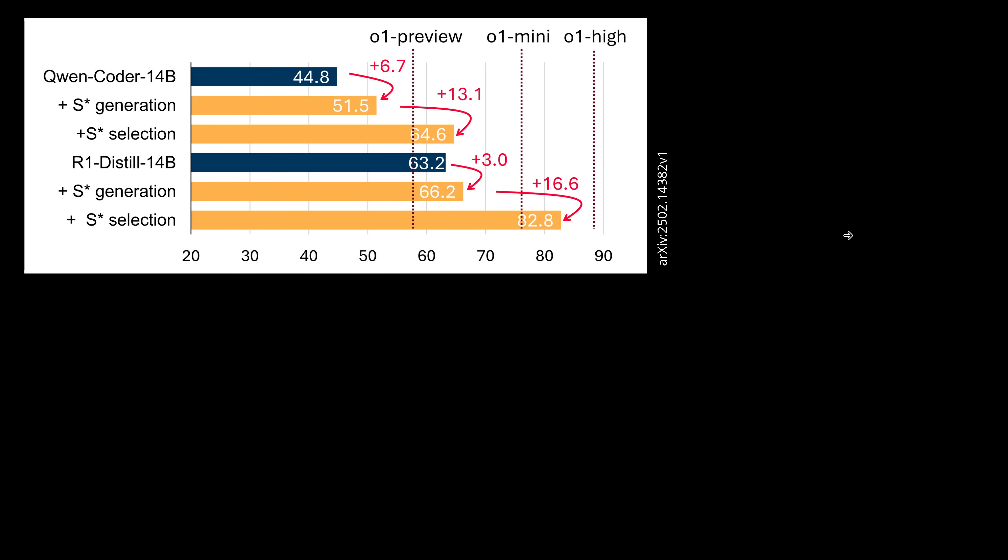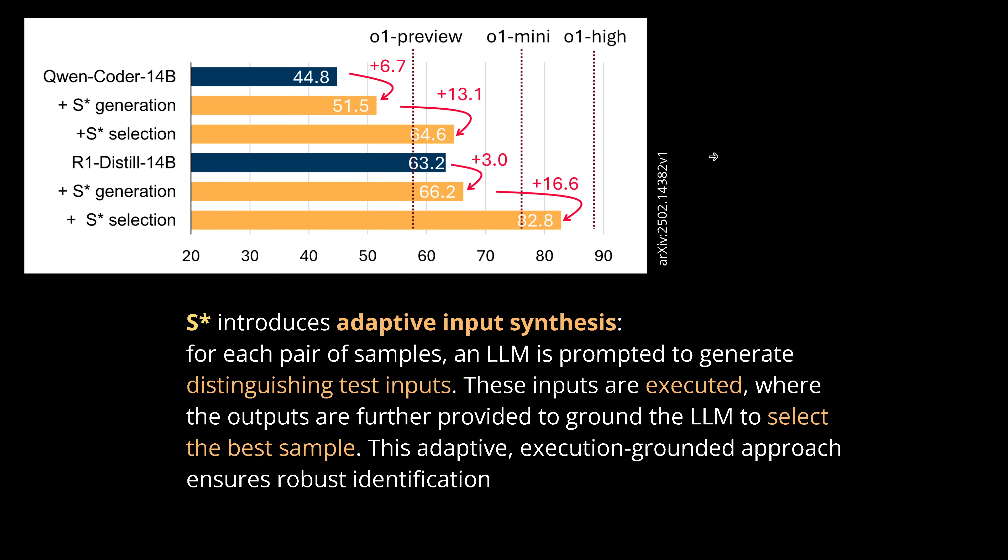Let me show you some beautiful ablation studies. They looked at the S-Star generation and selection stages. From the first one we got a 6.7 percent improvement, and the second is 13 percent. Interesting, the second one is so much more interesting. Here R1 Distilled 14B we have a plus 3 percent and plus 16 percent. You see, this second one is really interesting. This adaptive input synthesis is what you could call the performance core of S-Star.